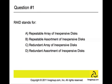RAID stands for: A. Repeatable Array of Inexpensive Ds, B. Repeatable Assortment of Inexpensive Ds, C. Redundant Array of Inexpensive Ds, D. Redundant Assortment of Inexpensive Ds. The answer is C. RAID stands for Redundant Array of Inexpensive Disks.